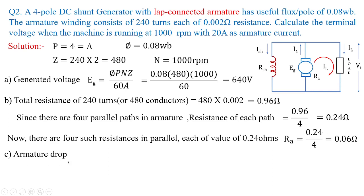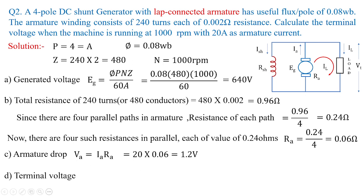The armature voltage drop is estimated using Ia·Ra: that is 20 × 0.06 = 1.2 volts. Finally, the terminal voltage formula is Vt = Eg − Ia·Ra. Substituting: 640 − 1.2 = 638.8 volts. So the terminal voltage of this DC shunt generator is 638.8 volts.